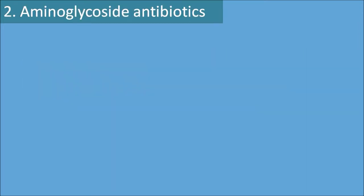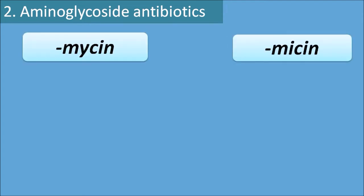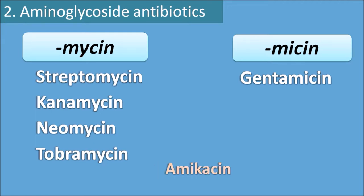The second category is aminoglycoside antibiotics. These have the suffix 'mycin' (M-Y-C-I-N) as well as 'micin' (M-I-C-I-N). Drugs with the suffix -mycin include streptomycin, kanamycin, neomycin, and tobramycin. Drugs with the suffix -micin include gentamicin. One exception in this category is amikacin, which has a different suffix from both.